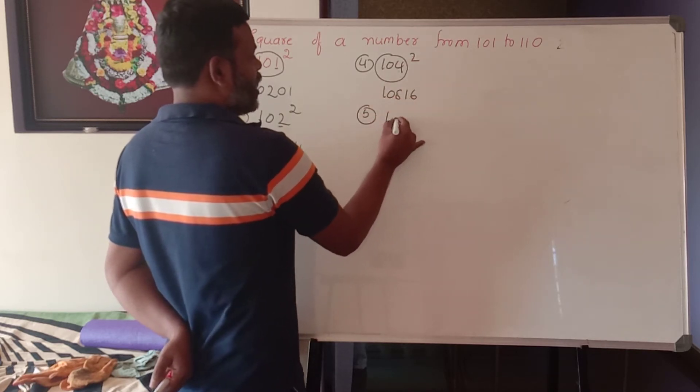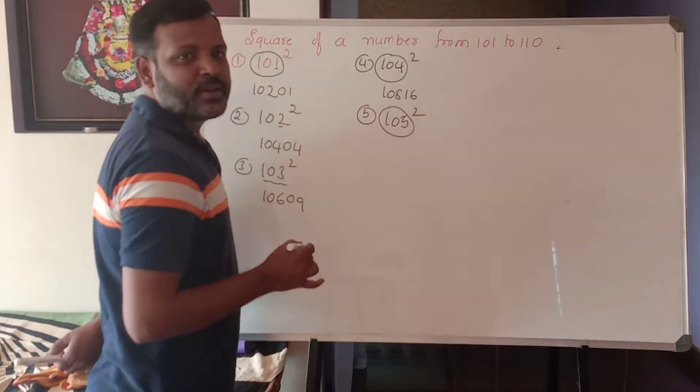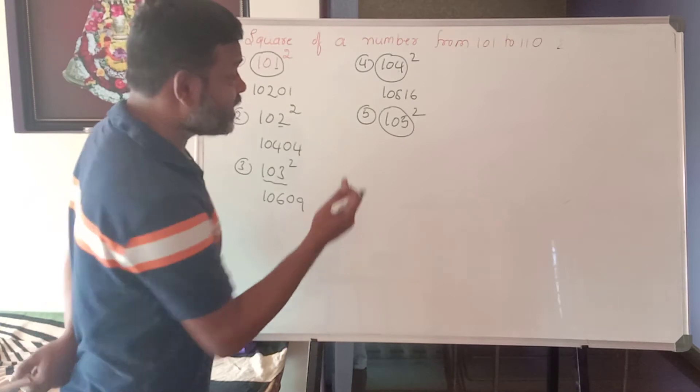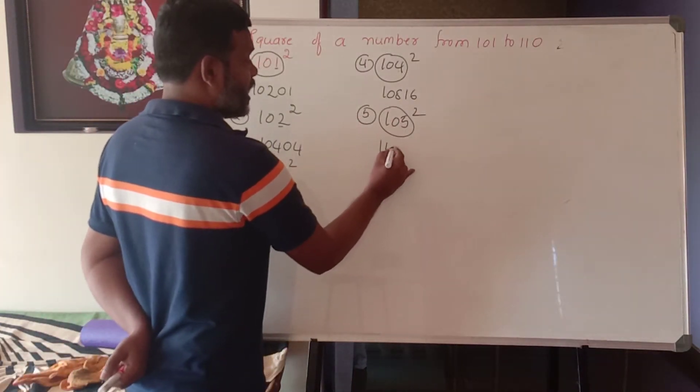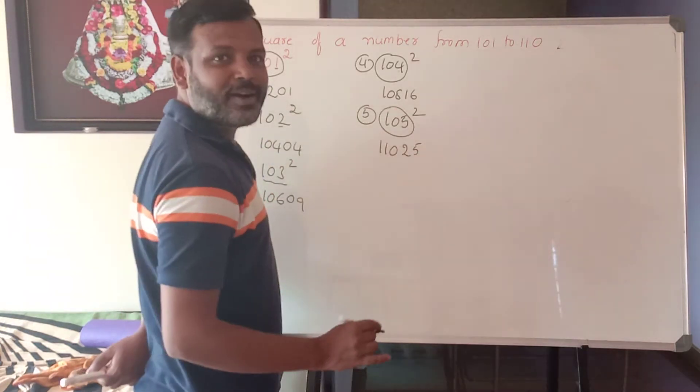Fifth one is 105 square. The given digit is 105 plus last digit, what is that? 5. 105 plus 5, 110. And 5 square is what? 25 itself.